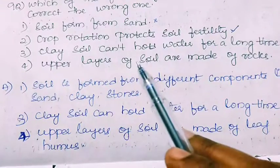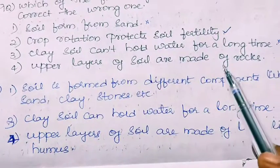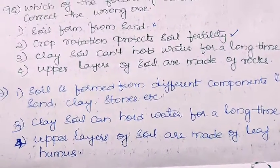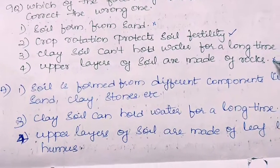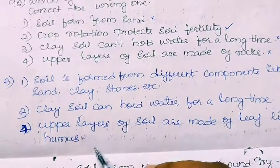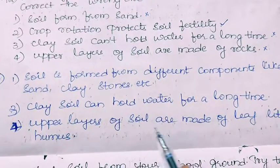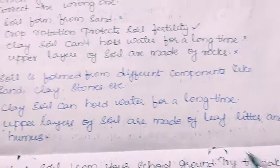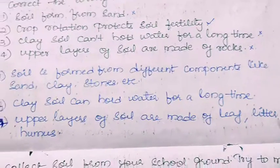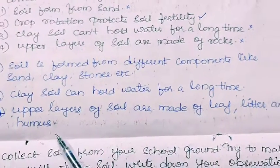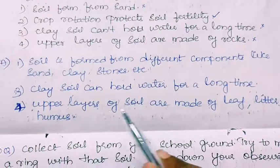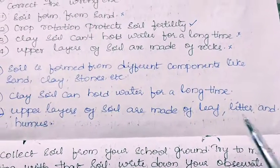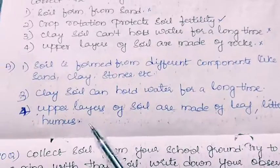Fourth statement: Upper layers of soil are made of rocks. This is a wrong statement. The correct statement is: upper layers of soil are made of leaves, litter and humus.